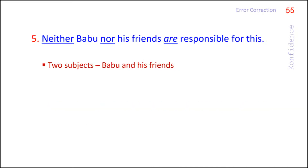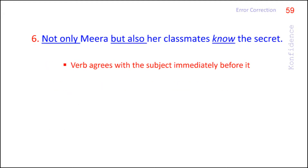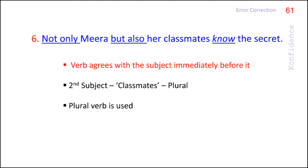In the second sentence, 'Babu' and 'his friends' are connected with 'neither/nor.' Here, the verb agrees with the subject immediately before it. The subject immediately before the verb is 'friends,' which is plural, so it is followed by the plural verb 'are.' In the third sentence, the same rule applies: when two subjects are combined with 'not only...but also,' the verb agrees with the second subject. Here, the second subject is 'classmates,' which is plural, so the plural verb 'are' is used.